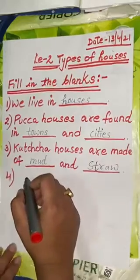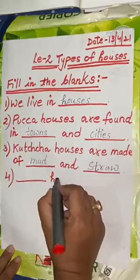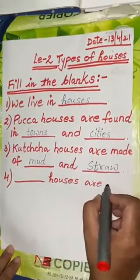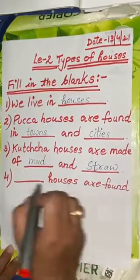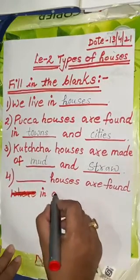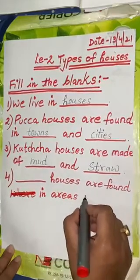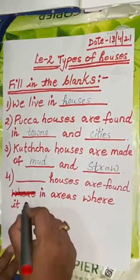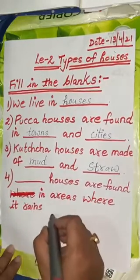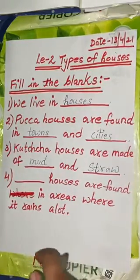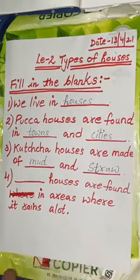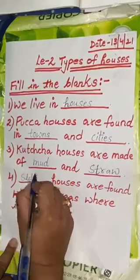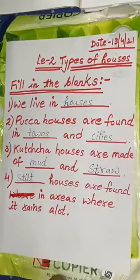Fourth question: dash houses are found in areas where it rains a lot. What are those types of houses? They are stilt houses. So the answer is: stilt houses are found in areas where it rains a lot.